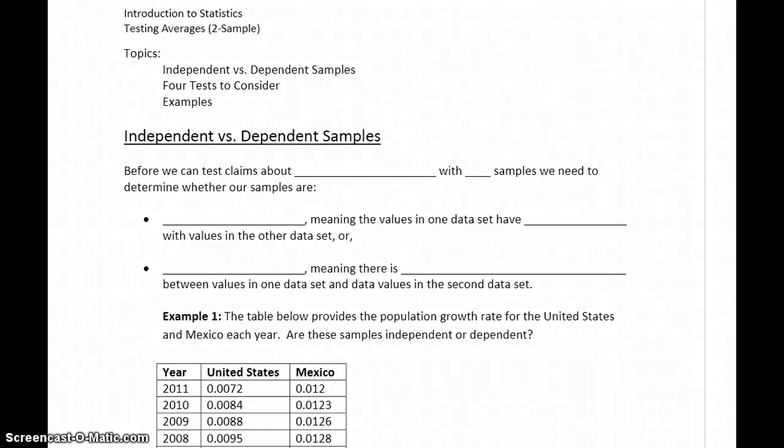In this section we want to move on to talking about testing averages from two different samples. Keep in mind anytime we're mentioning averages, what we mean is determine which is appropriate, either the mean or median, and then test a claim about that parameter.